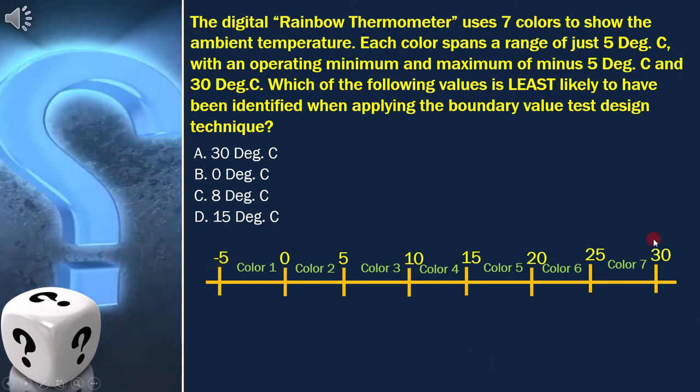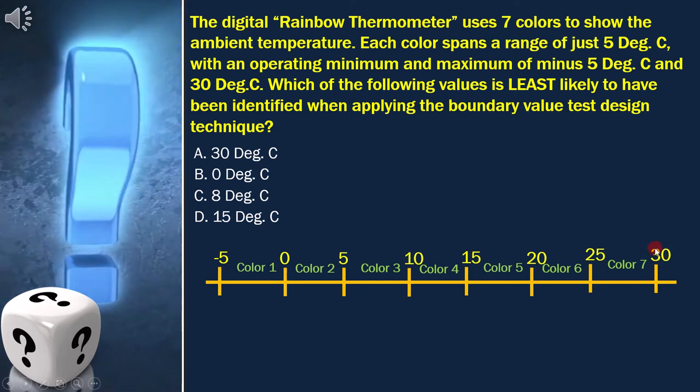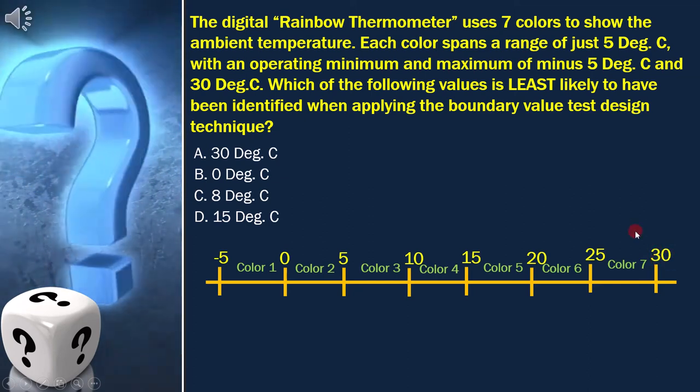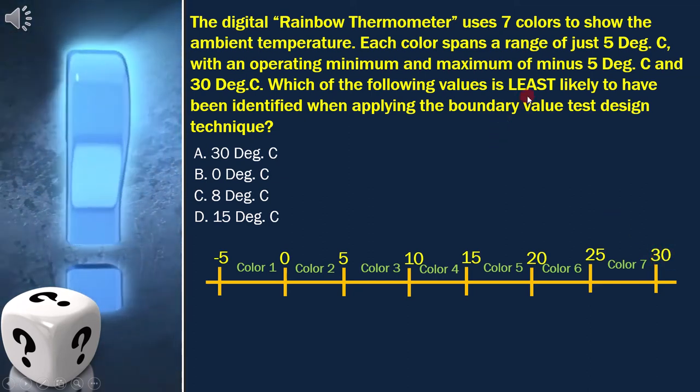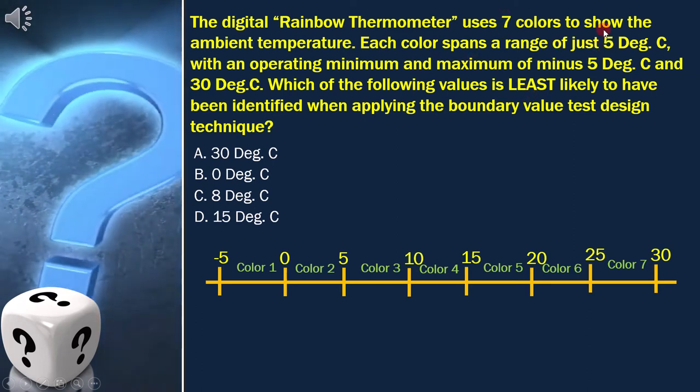That is why negative 5 is the lower boundary and 30 is the highest boundary. And as per the question, we have 7 color bands and each color spans a range of just 5 degrees Celsius.